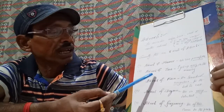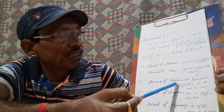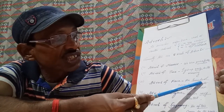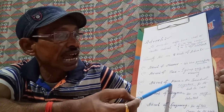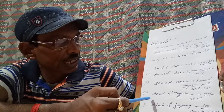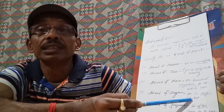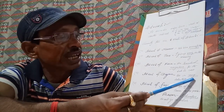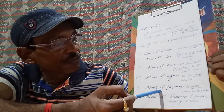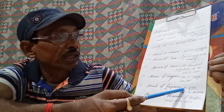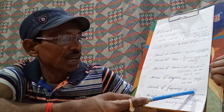Number three: adverb of place. Example: 'he searched everywhere for the book he lost' — here 'everywhere' is the adverb of place. Number four: adverb of degree. Example: 'he is very talented' — here 'very' is the adverb of degree.